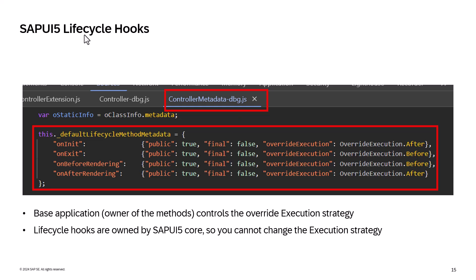I talked about the SAPUI5 lifecycle hooks. We found that the base application, or the owner of the methods, controls the override execution strategy. In our case, these lifecycle methods of SAPUI5 applications are owned by the SAPUI5 core team, so unless they change it, this is going to be the behavior of the lifecycle hooks.